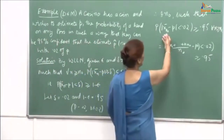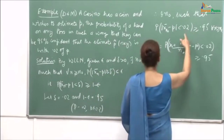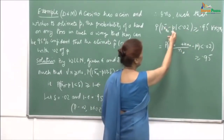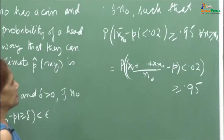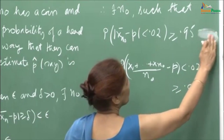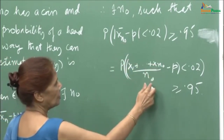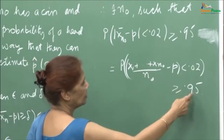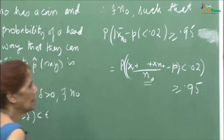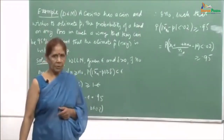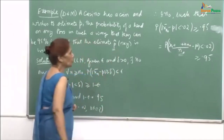Substituting the values δ = 0.02 and ε = 0.05, we get P(|(x₁ + x₂ + ... + x_{n₀})/n₀ − p| < 0.02) ≥ 0.95. There exists such an n₀, so the casino can toss the coin that many times to find a good estimate p̂ for p.